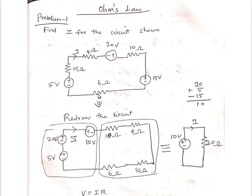First, I'm redrawing this circuit in a simplified form. I'm connecting all the voltage sources in series and also connecting all the resistors in series. Then I'm finding the equivalent resistance and the equivalent voltage.